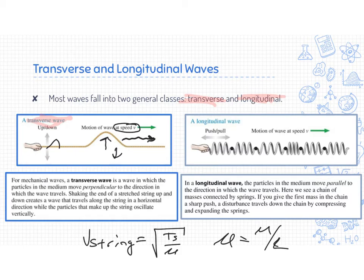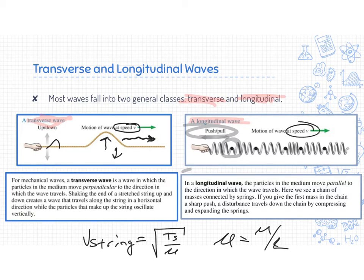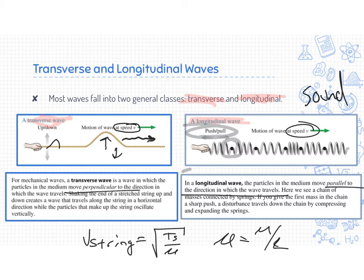The other type of wave is longitudinal waves, which go in and out. You should have seen this in the lab — there's a compression caused by a push or pull, and that compression travels at some speed. A great example is sound: sound is a longitudinal wave. When I talk, the energy hits the molecules and those molecules go back and forth through the air. In a longitudinal wave, the particles move parallel to the direction of travel; in a transverse wave, the particles move perpendicular to the direction.